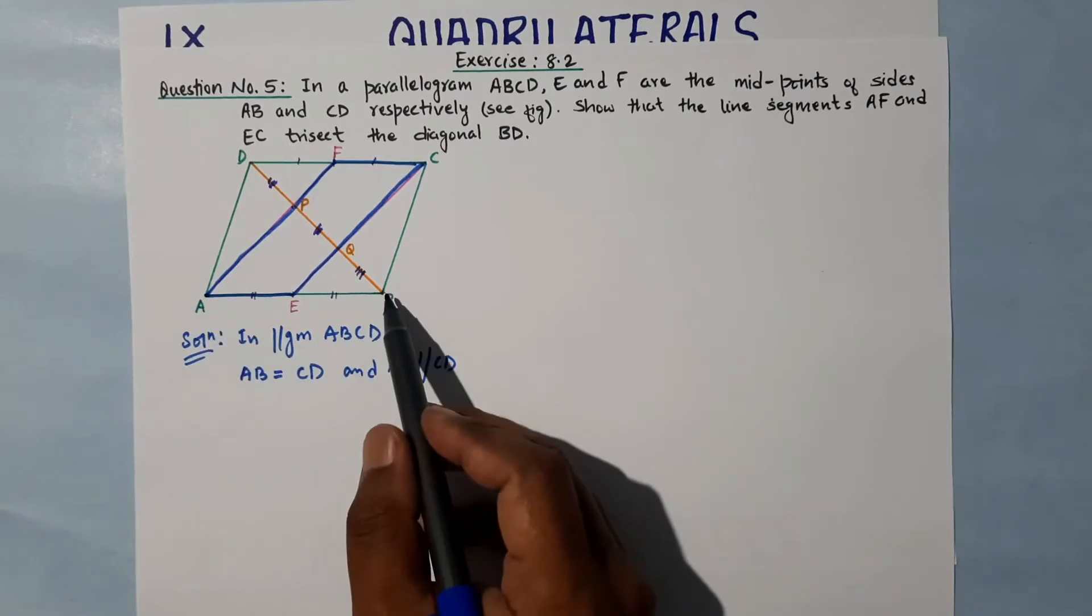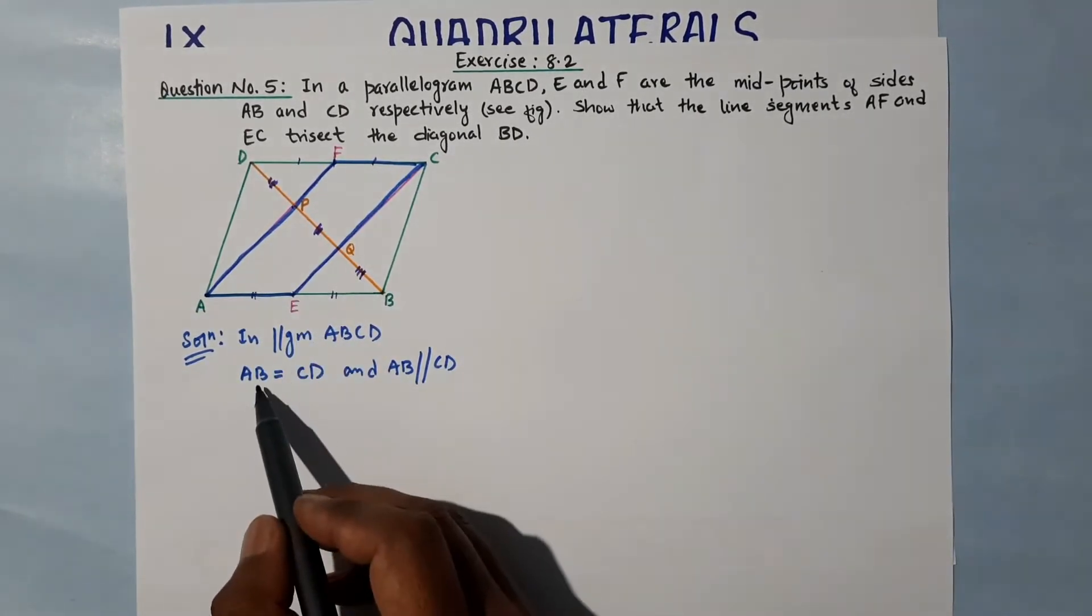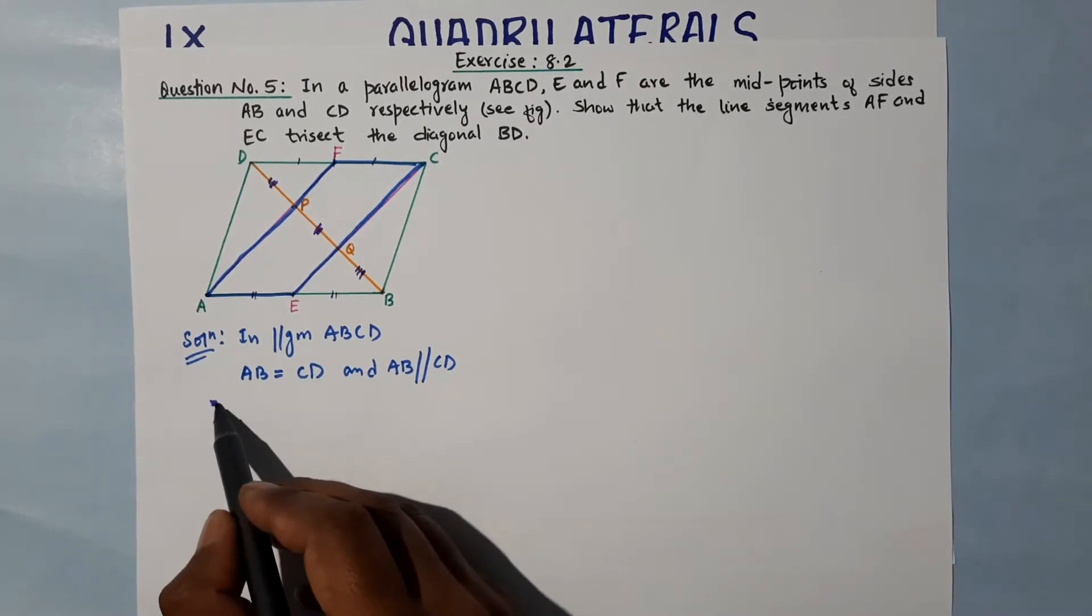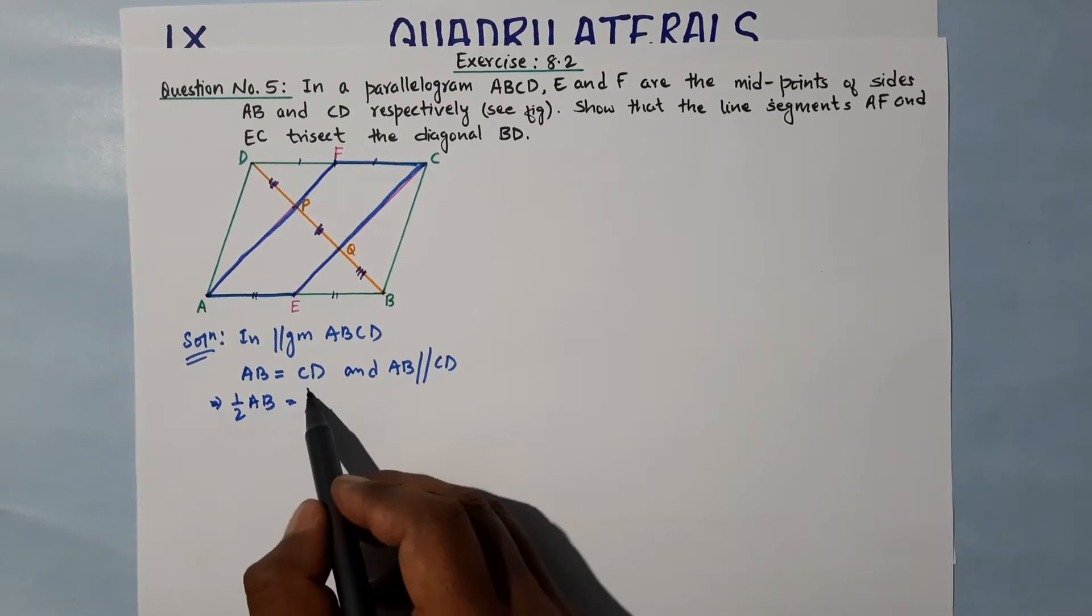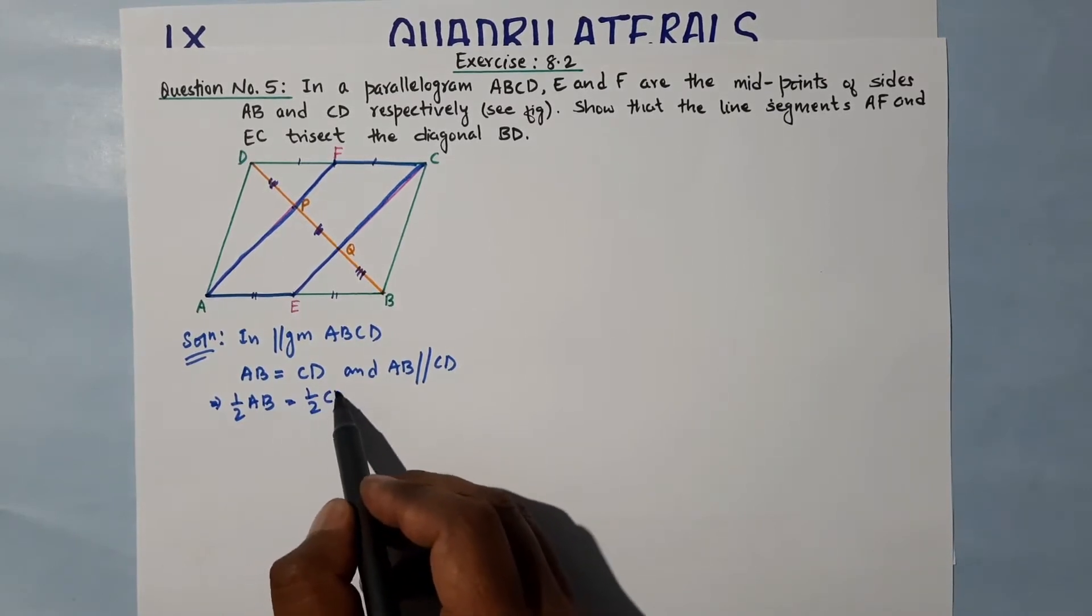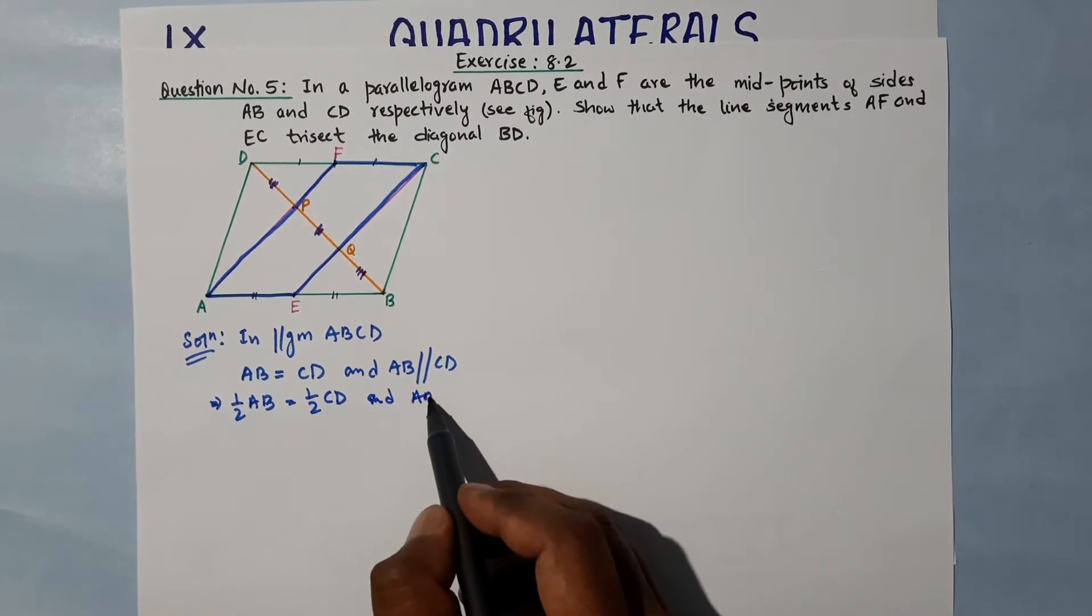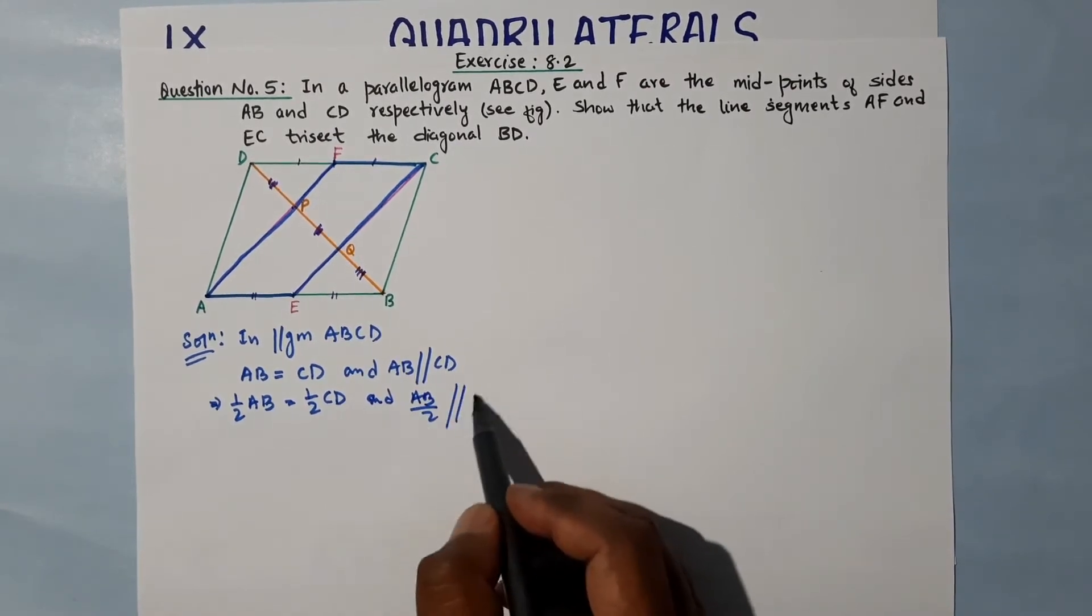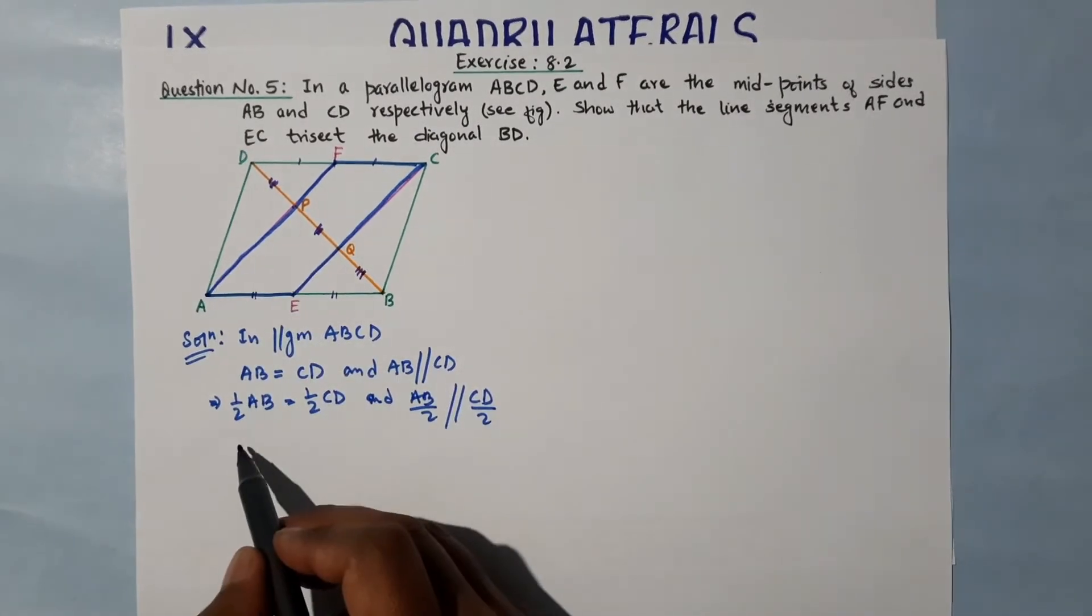Half of AB is equal to half of CD. AB's half is parallel to CD's half. At the same time, half of AB is AE, that means...